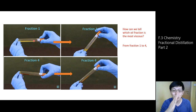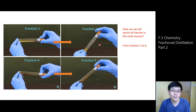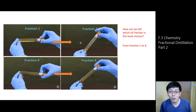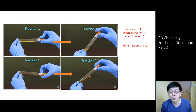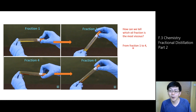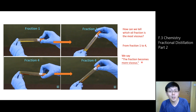We place the test tube horizontally to see how long it takes for the liquid to flow from one end to the other. If we return the test tube to a vertical position, for fraction 1 the liquid drops immediately and leaves no trace. However, for fraction 4, some liquid sticks to the wall and flows slowly back to the bottom. So from fraction 1 to fraction 4, the fraction becomes more viscous.